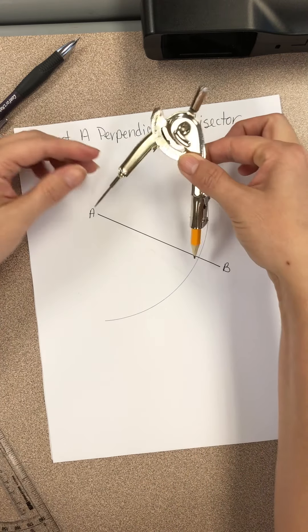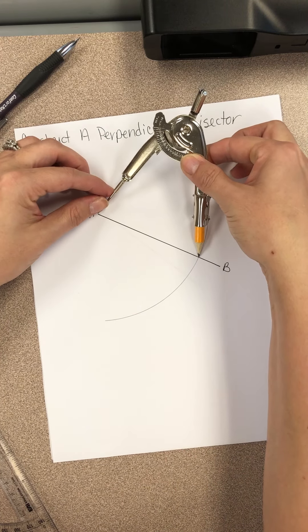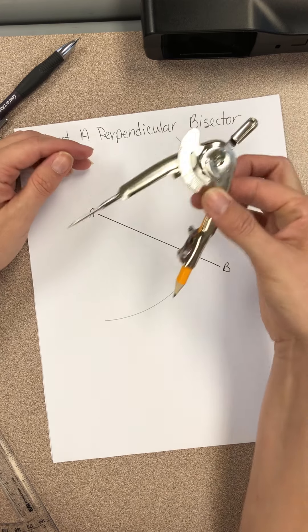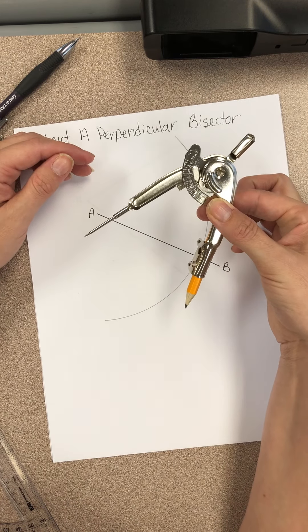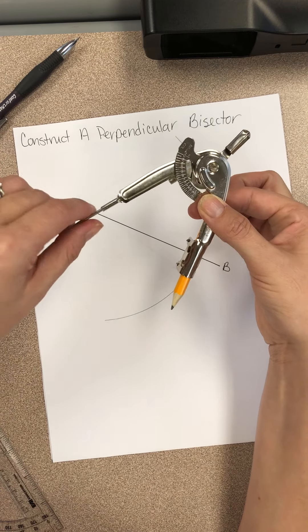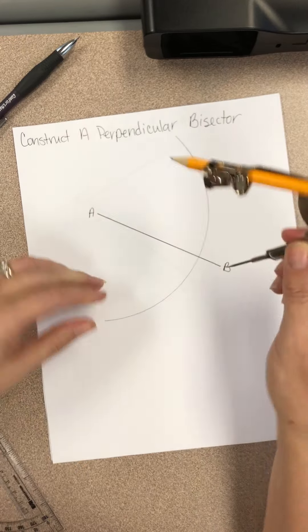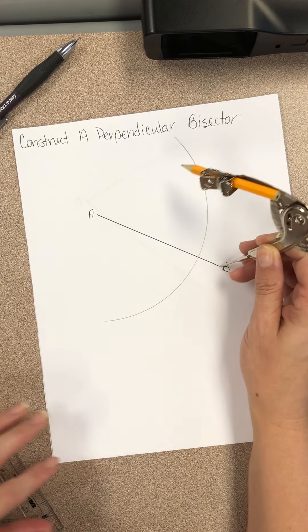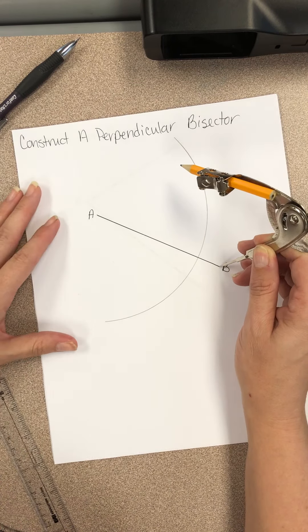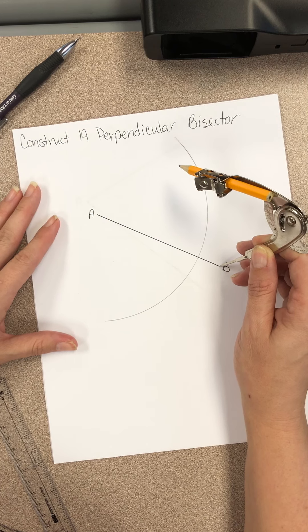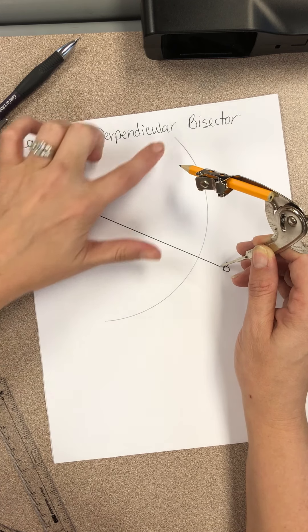Okay, now I have not changed my compass setting. If you look, it's the exact same. If I put it on A, it touches that arc. So you don't want to change it. So it says without changing the size of your compass, place the needle on point B and create another large arc so that it intersects the arc from step one twice, above and below it.